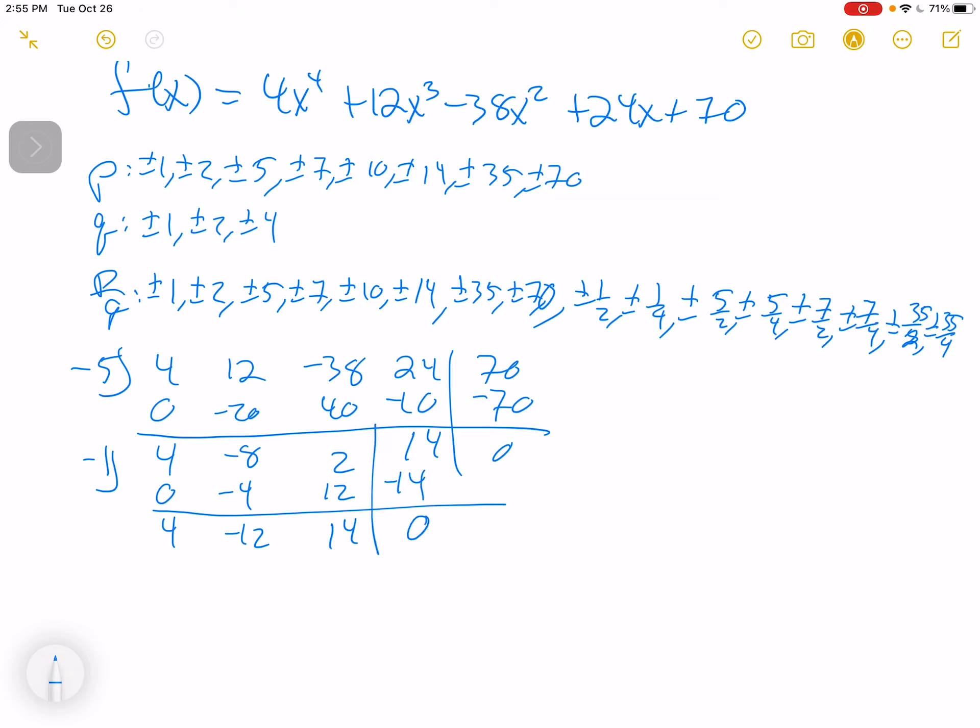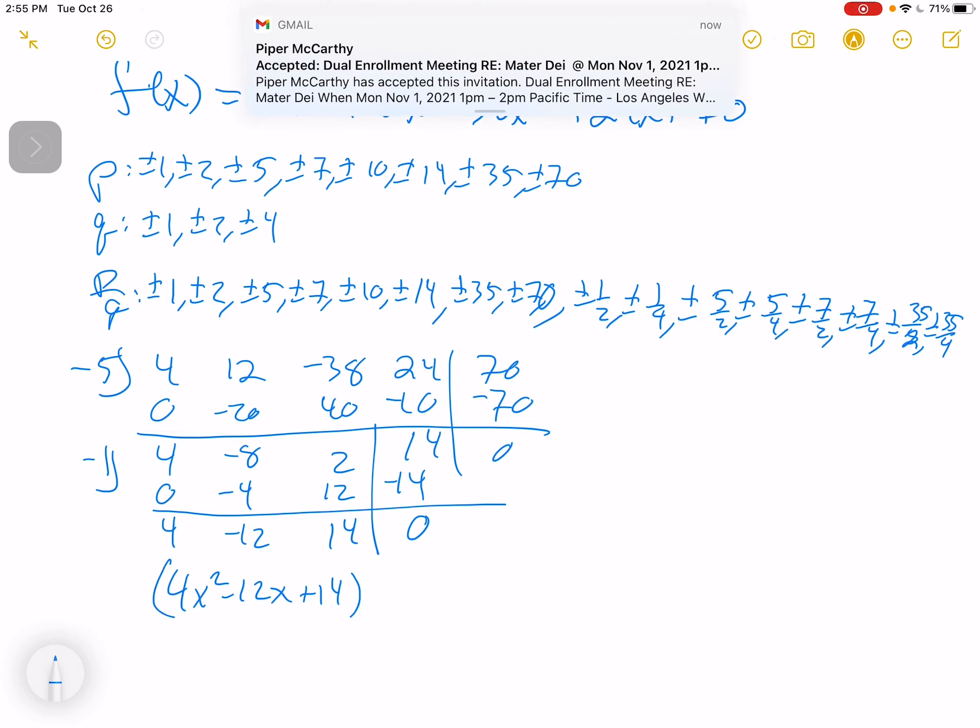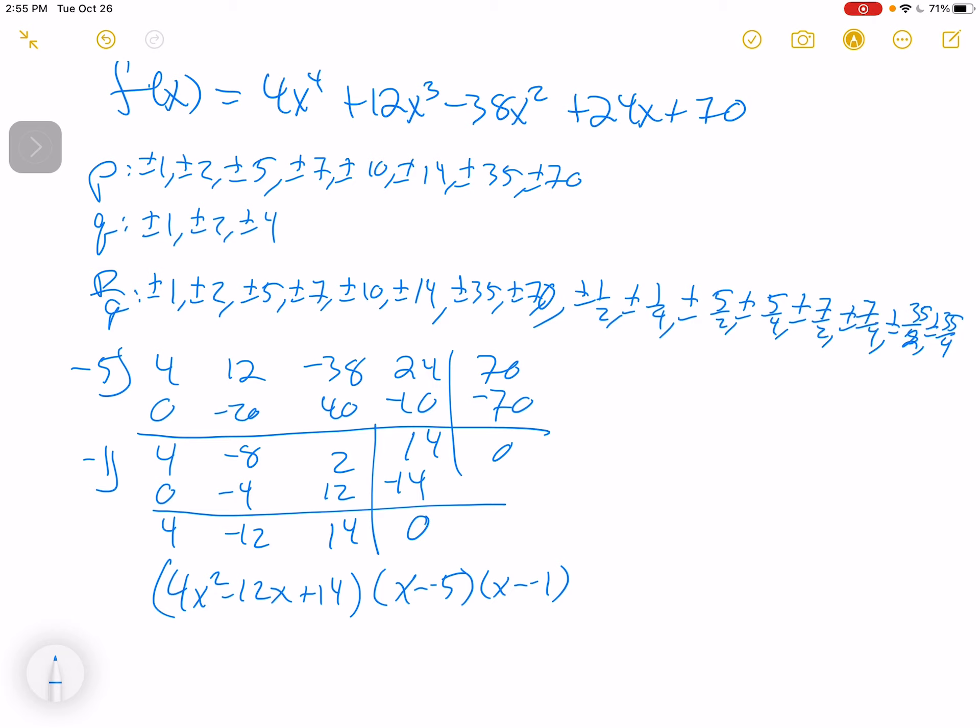And so what we have left is this 4x squared minus 12x plus 14. And technically, then, it's times x minus negative 5 times x minus negative 1. So it's really a 4x squared minus 12x plus 14 times x plus 5 times x plus 1.